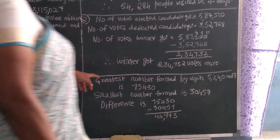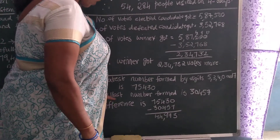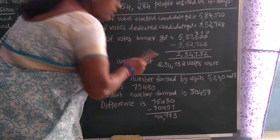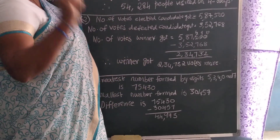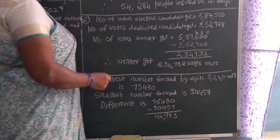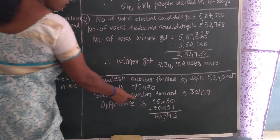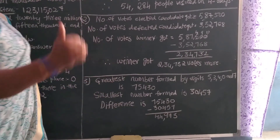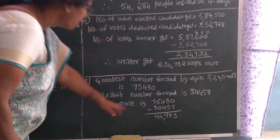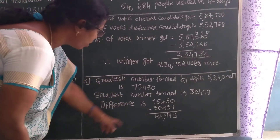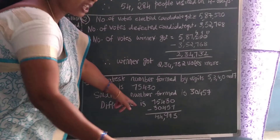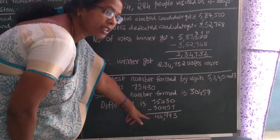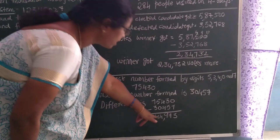First I will write the greatest number and smallest number formed by the digits. Greatest number is 75,430. Smallest number — you should not start writing from zero because zero also has a certain value. So smallest number is 30,457. Difference means subtraction: 75,430 minus 30,457. On subtraction, I got 44,973.